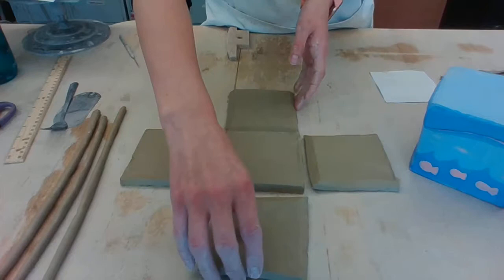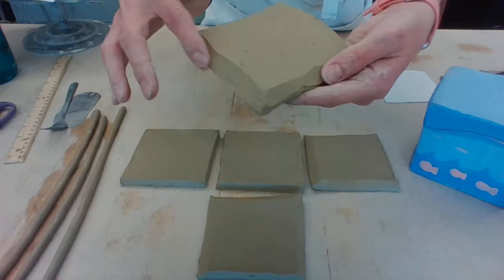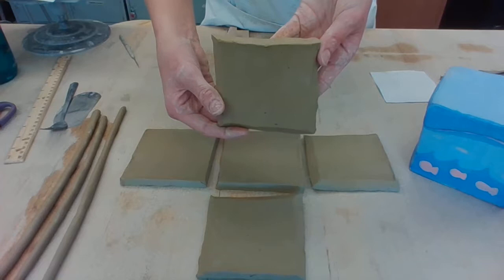Now, before we put these together, we have to bevel the edge where you could see how it's at a 45-degree angle on all three sides of the walls. We're not doing the top because that stays a perfect straight edge.